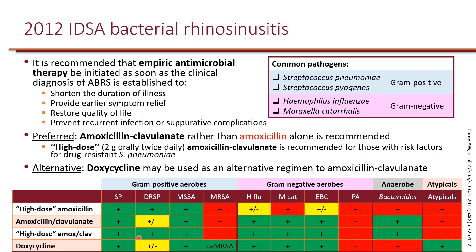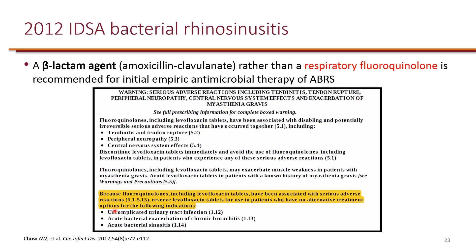If someone can tolerate amoxicillin-clavulanate, they should receive that first. The guideline states that beta-lactam agents are preferred over respiratory fluoroquinolones for initial empiric antimicrobial therapy. This is a very good recommendation, as respiratory fluoroquinolones are more likely to cause collateral damage.